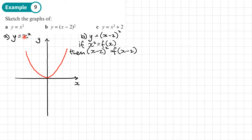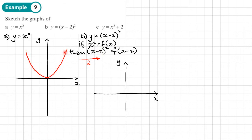Replacing x with x minus 2 gives a translation that moves the graph to the right by two squares, because it's minus 2 in the bracket. If it were plus 2 it would move in the opposite direction — anything in the bracket always does the opposite to what you expect. So we keep the shape the same but move it across: the origin coordinate (0, 0) becomes (2, 0). We sketch the curve shifted two squares to the right. It's always good practice to write down where the graph crosses the axes.